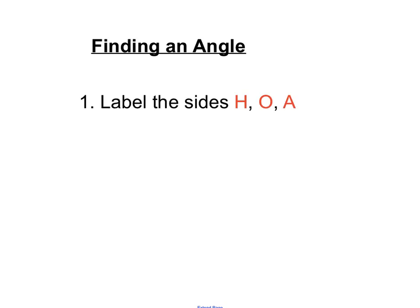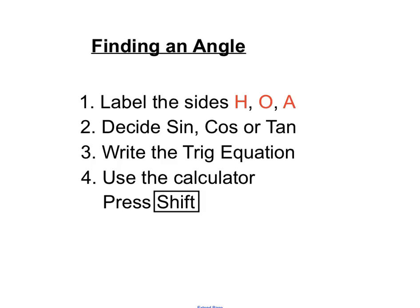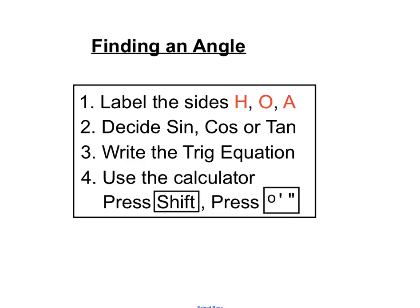To recap finding an angle: the steps are very similar to finding a side. Label the sides, decide sine, cos, or tan based on which sides are given, then write the trig statement. When entering into the calculator, press Shift Sine, Cos, or Tan. Use the degrees, minutes, and seconds button to help with rounding. The main difference between finding a side and finding an angle using trigonometry ratios is remembering to press that Shift button. Thanks for listening — see you next time.